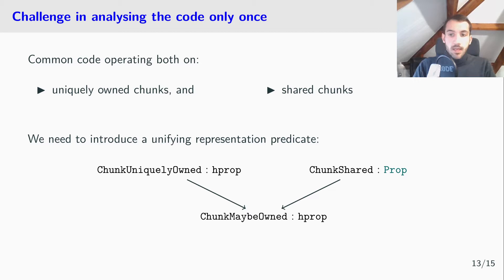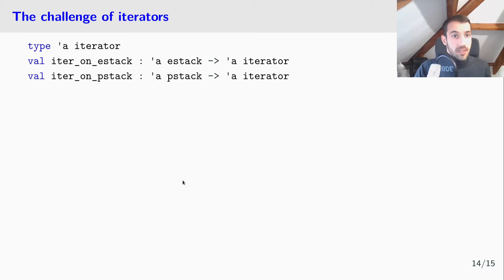So I showed you in the introduction some iterators, so let me show you how we handle them. We provide a type for iterators, and we can iterate on both ephemeral stacks and persistent stacks. Iterators have direct access to internal pointers of all stacks, so this is typically very difficult to verify using separation logic. Nevertheless, we provide three operations.